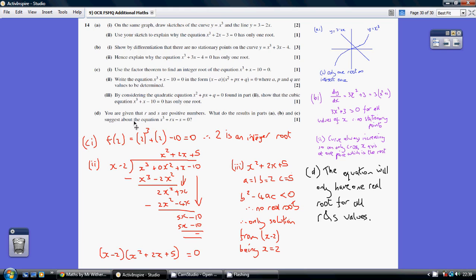And then part D to finish, you're given that R and S are positive numbers. What does all the stuff above suggest to you about this, while the equation will only have one real root for all R and S values?